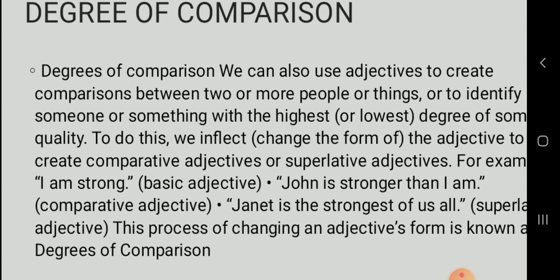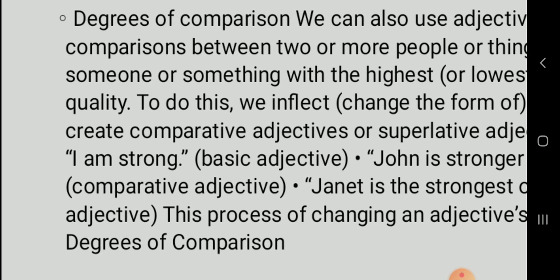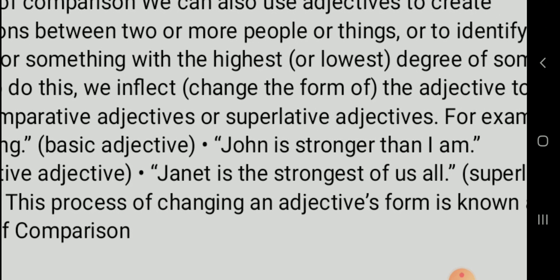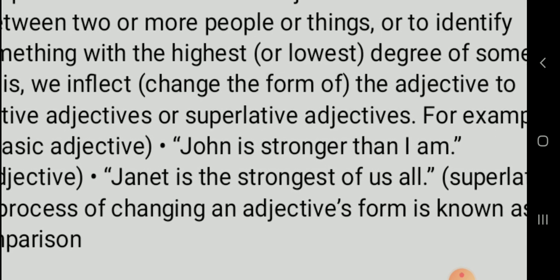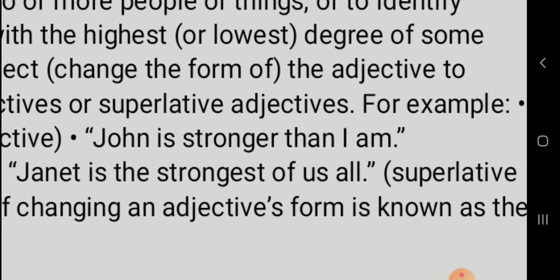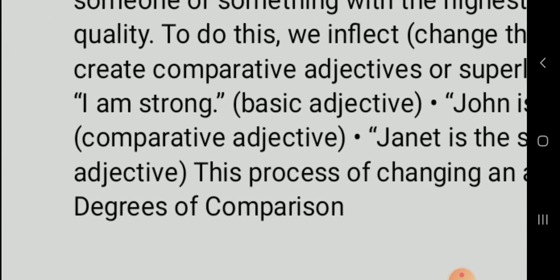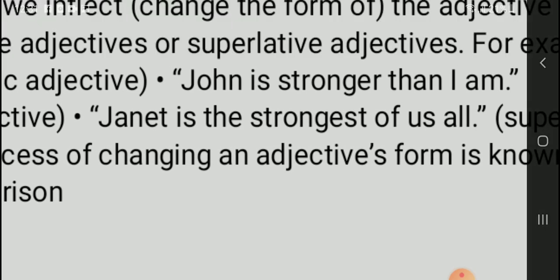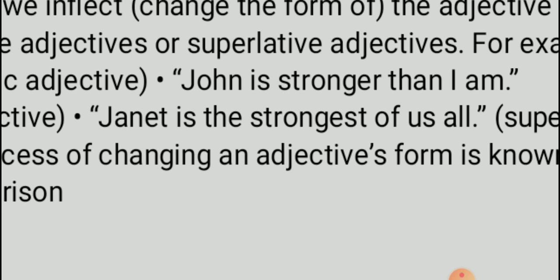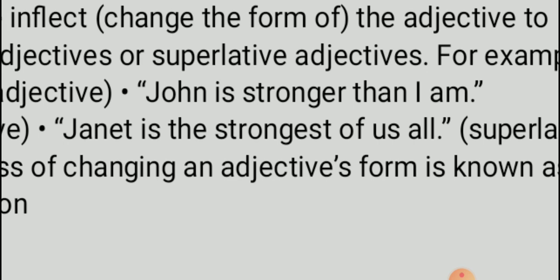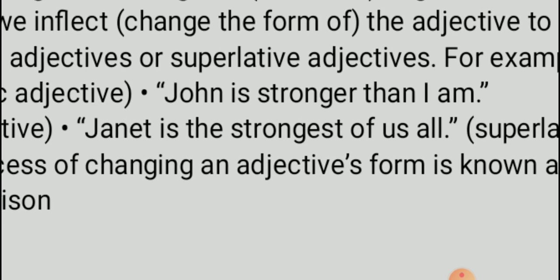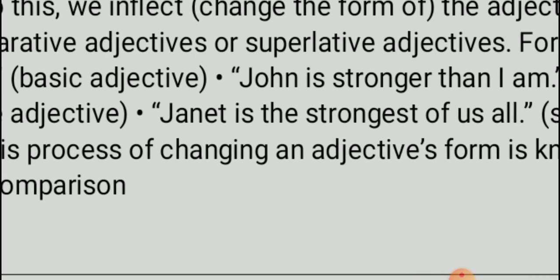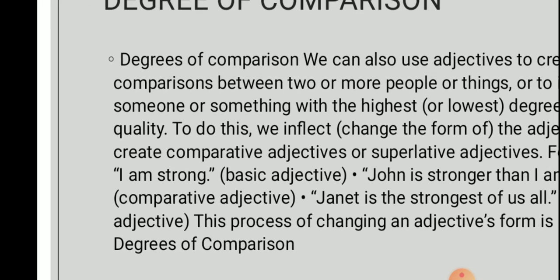For example, 'I am strong' uses the base adjective. When comparing with another entity, we attach '-er' to create the comparative degree — for example, 'John is stronger than I am.' This is a comparison between two entities. The third category is the superlative degree, used for comparison among more than two entities — for example, 'Genesis is the strongest of all.' This process of changing an adjective's form is known as the degree of comparison.